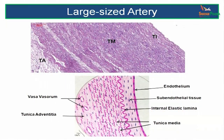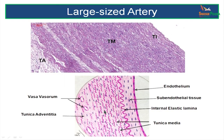In a high-power view of the large-sized artery, you can see the endothelium, the tunica intima, and a very thick tunica media. The tunica media has more elastic fibers and less smooth muscle fibers, so you do not notice a very prominent internal elastic lamina. In the diagram, you can see the endothelium on a basal lamina, subendothelial connective tissue, a less prominent internal elastic lamina, a lot of elastic fibers in the tunica media along with smooth muscle cells, and a much thinner tunica adventitia. Note the vasa vasorum in the tunica adventitia.